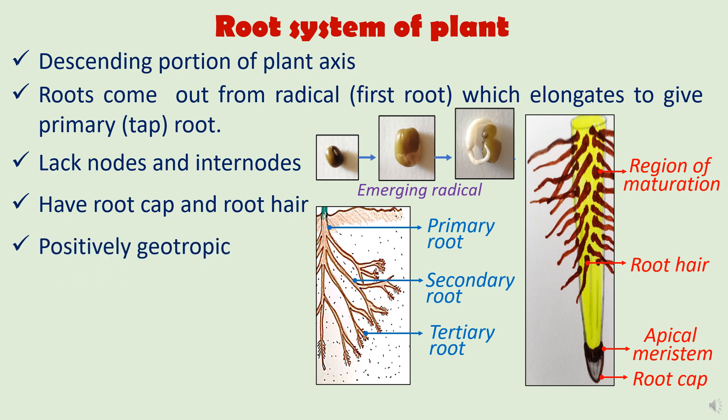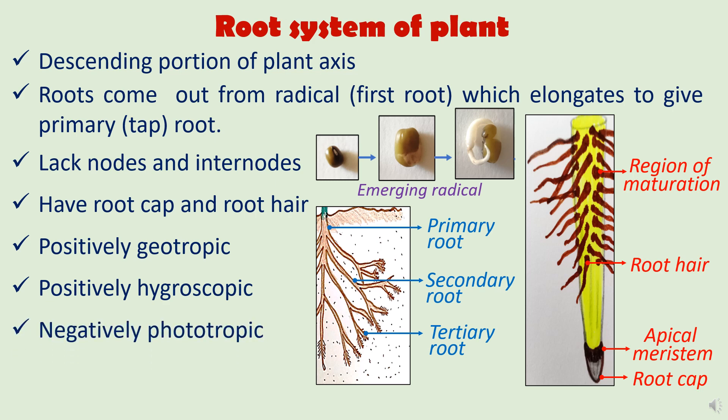Roots are positively geotropic — they grow in the direction of gravitational force. Roots are positively hygroscopic — they are capable of absorbing moisture from the soil because of the presence of highly permeable root hairs. Roots are negatively phototropic — they grow in darkness, away from sunlight. Roots also lack chlorophyll, which is why they are not green in color, although roots of some epiphytes are capable of accumulating chlorophyll because their roots are exposed to sunlight.